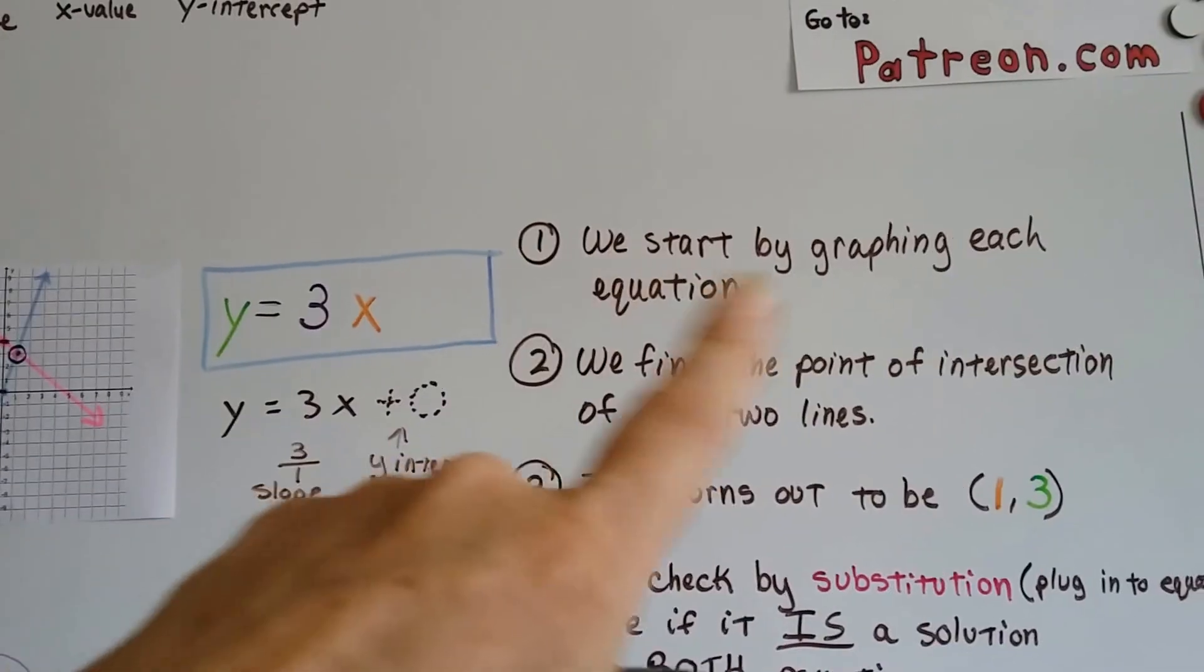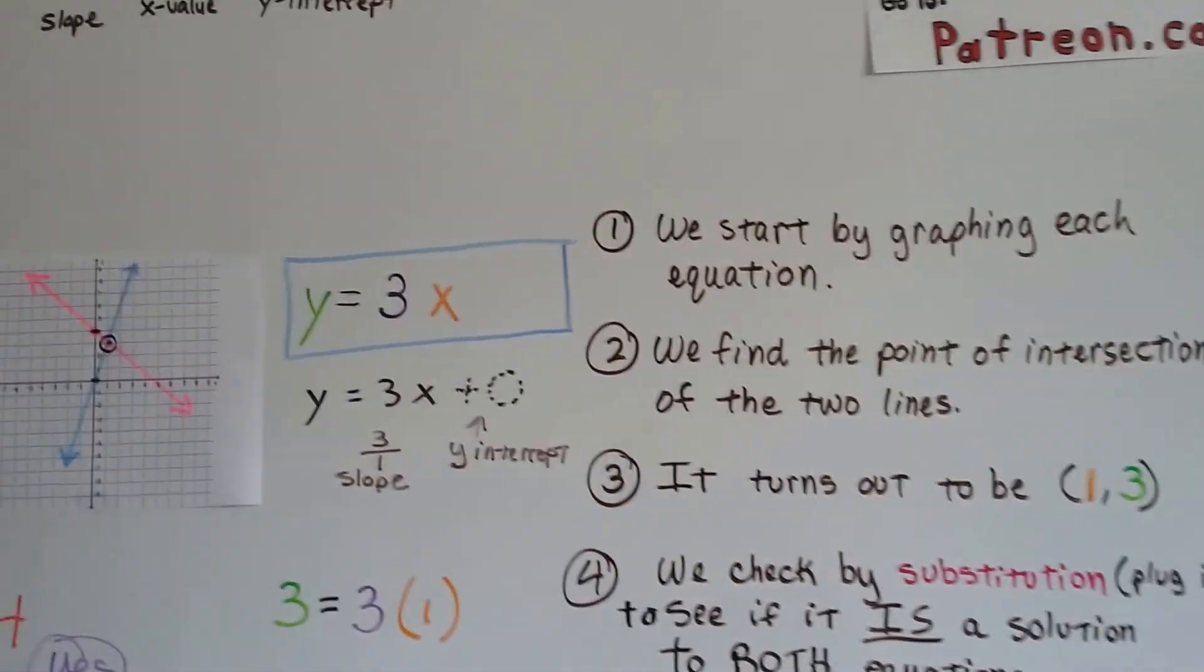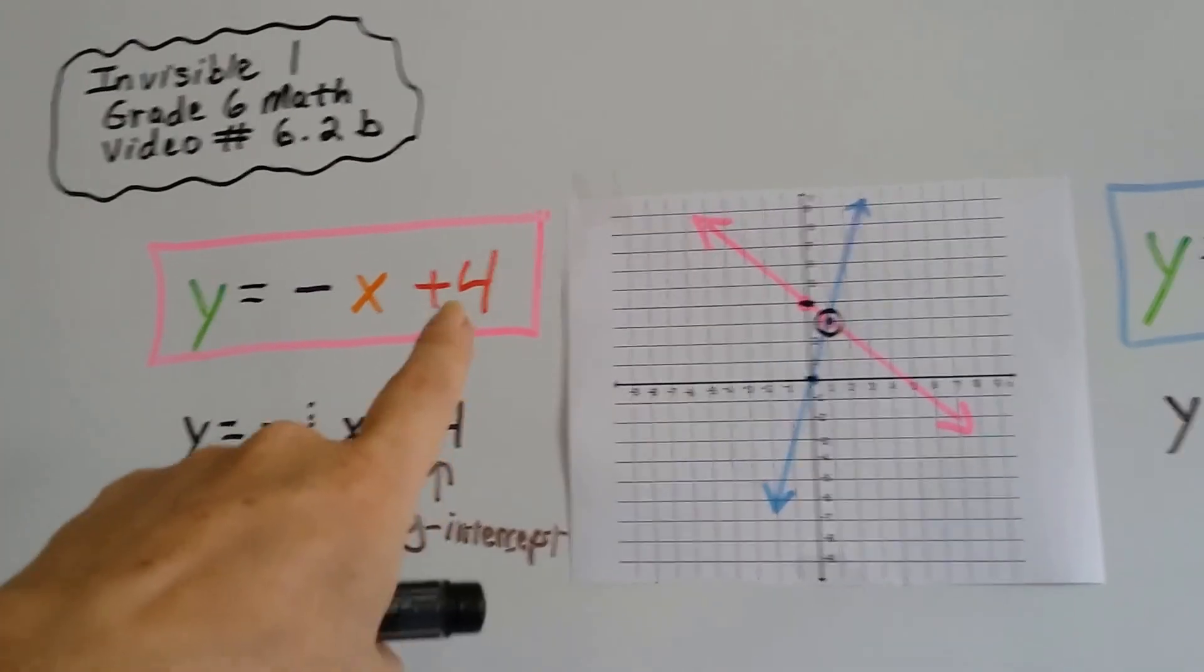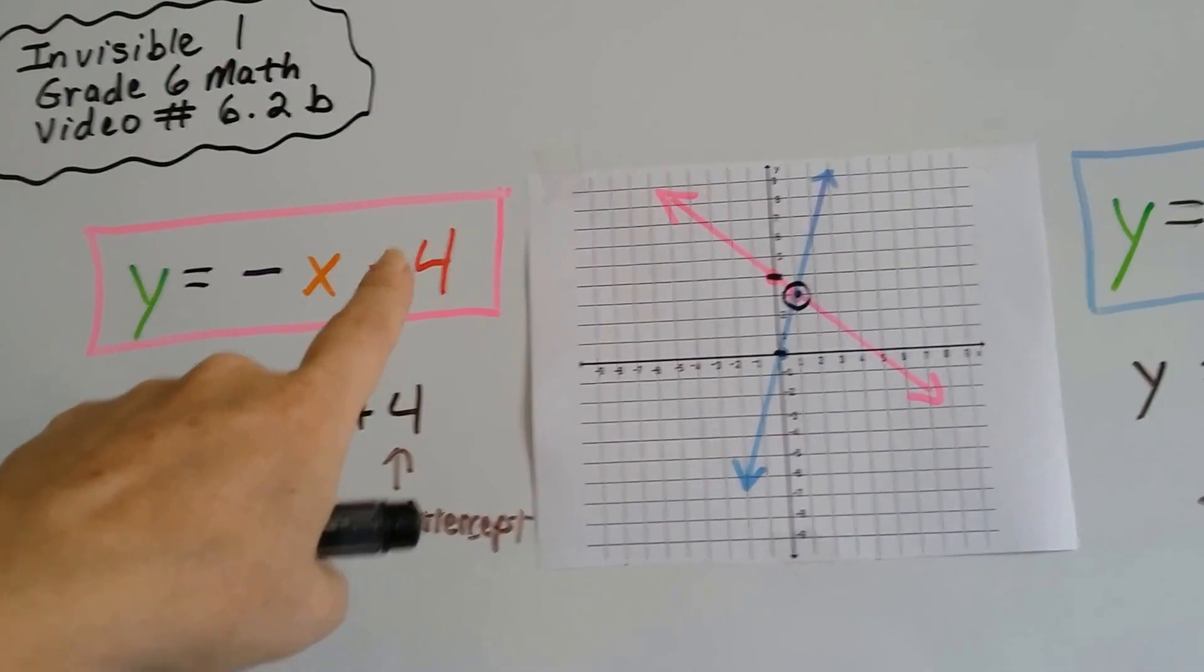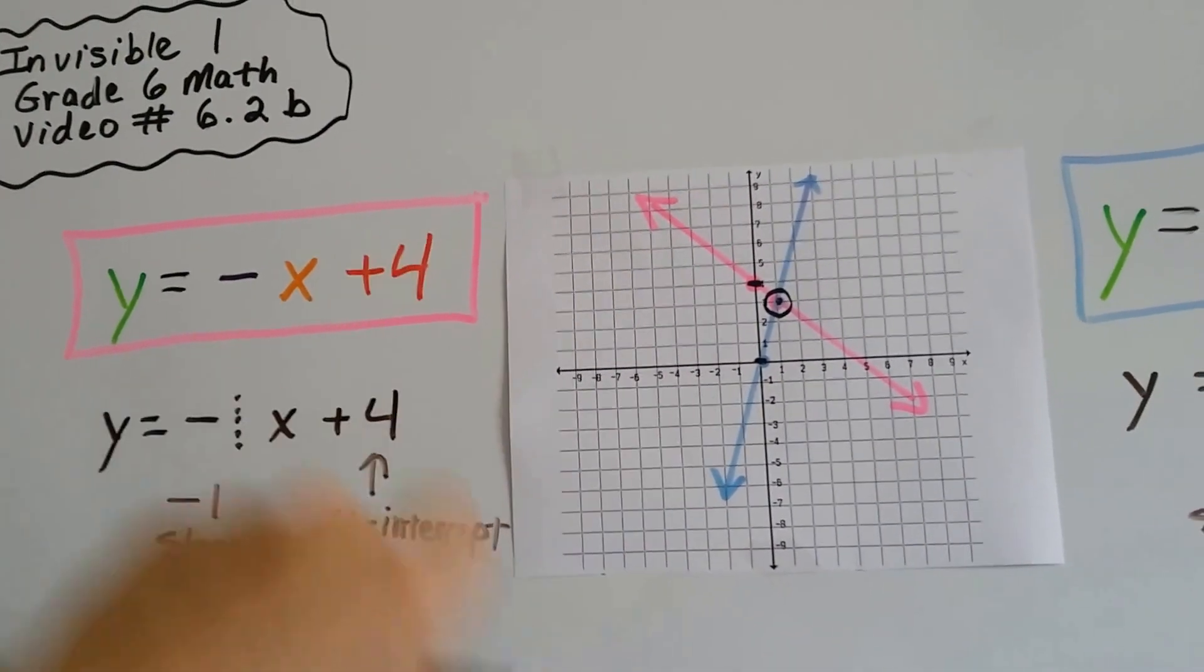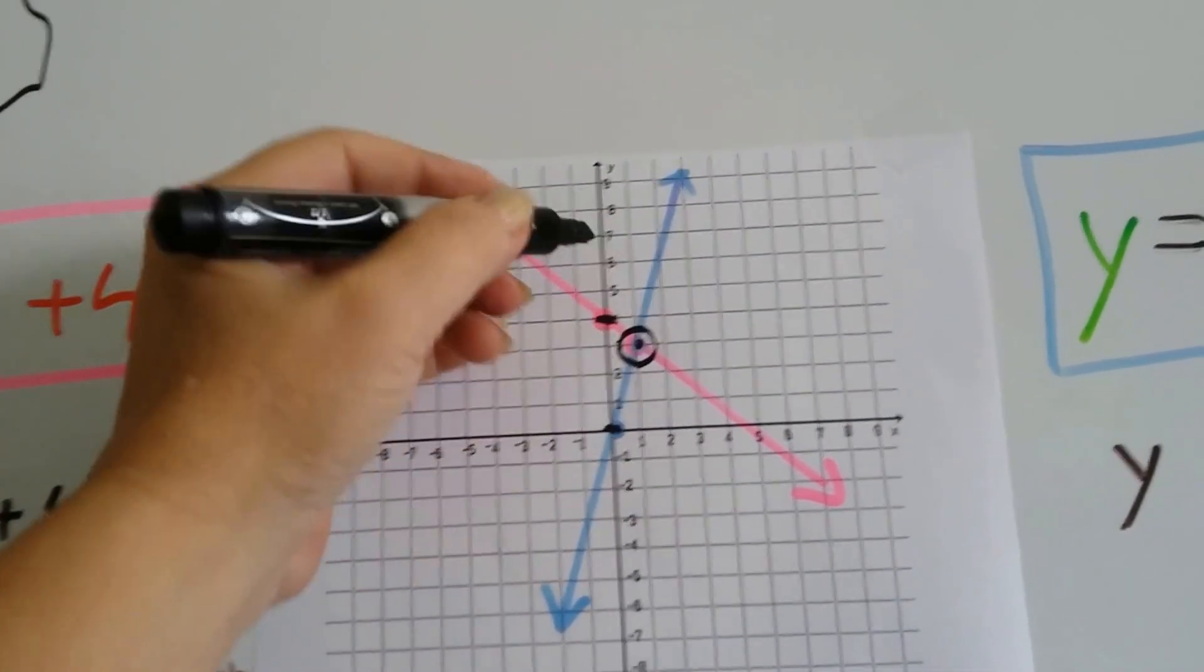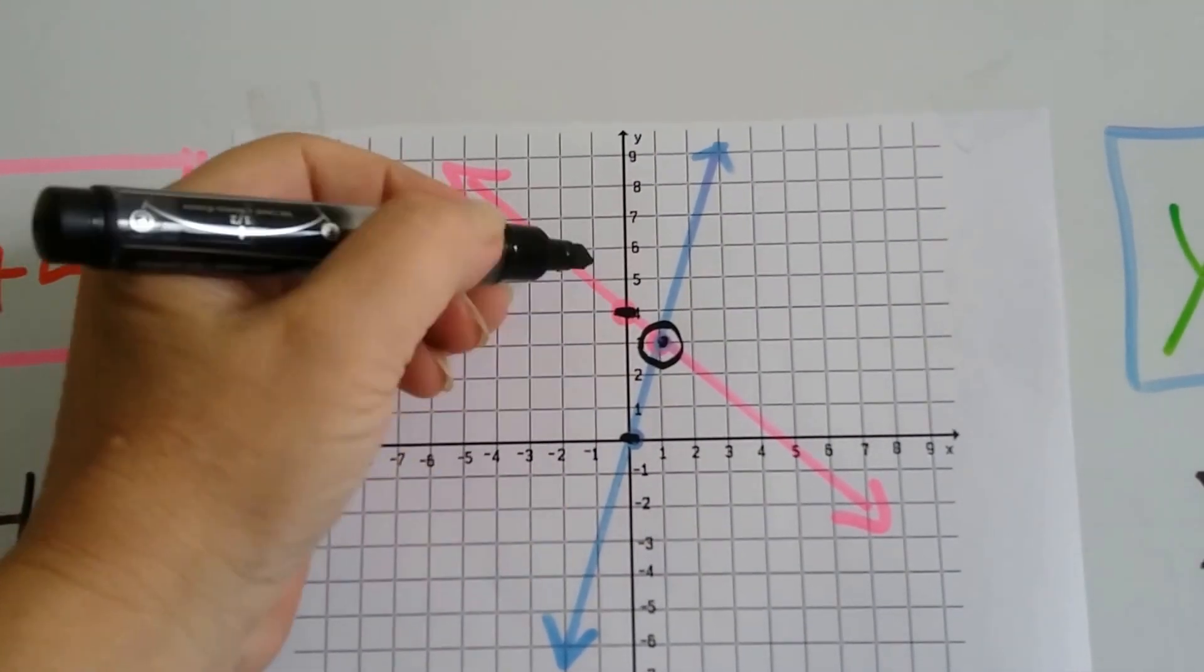The first thing we do is start by graphing each equation and we find the point of intersection of the two lines. Remember what we did before? We started with the y-intercept, and in this one it's a positive 4. So that's on the y-axis at positive 4. Here's the y-axis and here's our positive 4. It'd be right there.